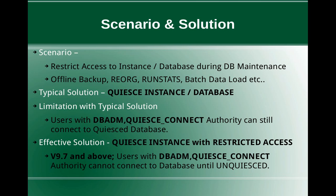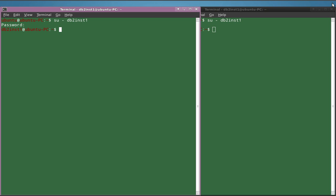The effective solution was introduced in version 9.7 and above. That is to use the QUIESCE INSTANCE command with the RESTRICTED ACCESS keyword. What this RESTRICTED ACCESS keyword does is it will not allow users with DBADM and QUIESCE CONNECT authority to connect to the database until the instance is unquiesced. This is a very important and very useful feature. Let's look at a few examples and demonstrate that for better understanding.